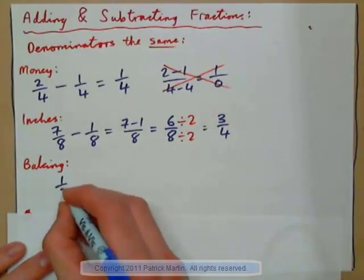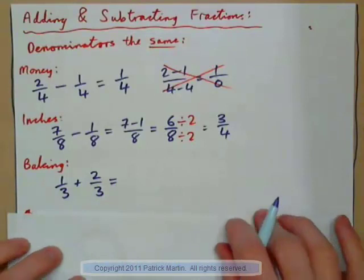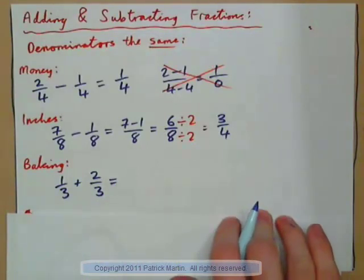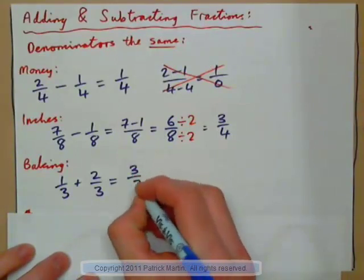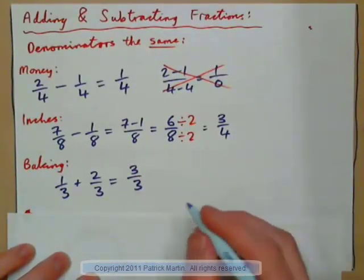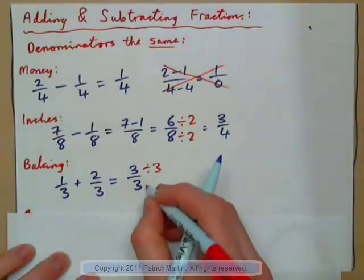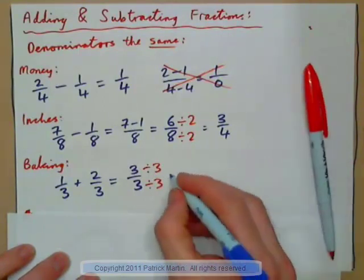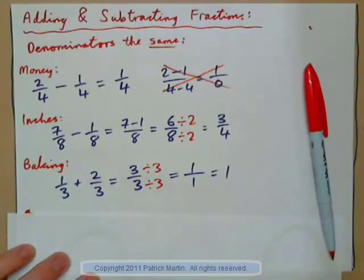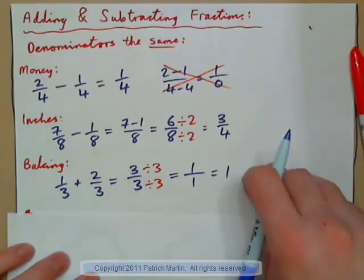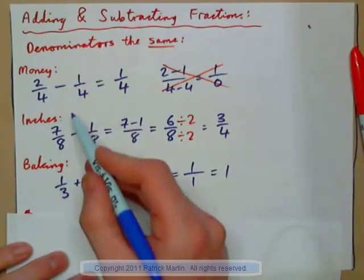Let's have a look at baking. 1 third of a cup of sugar plus 2 thirds of a cup of sugar — what's that going to be? That's 3 thirds. And we can put that in lowest terms: divide the top by 3, divide the bottom by 3, and we get 1 over 1, which is 1 — so it's 1 cup of flour. Again, when the bottoms are the same, we combine the tops. That's how we add and subtract fractions.